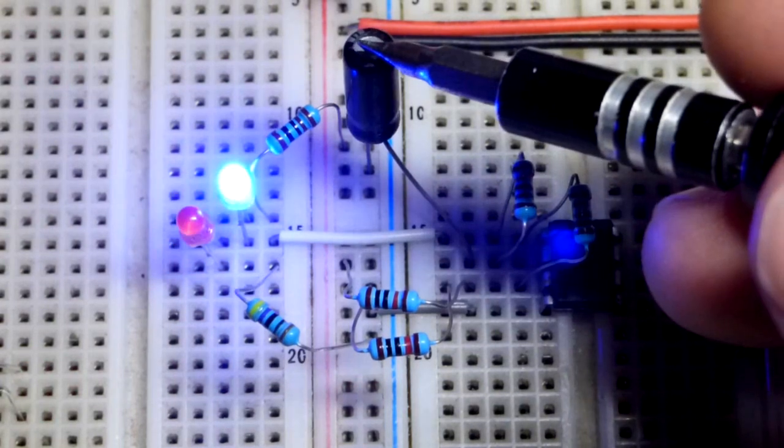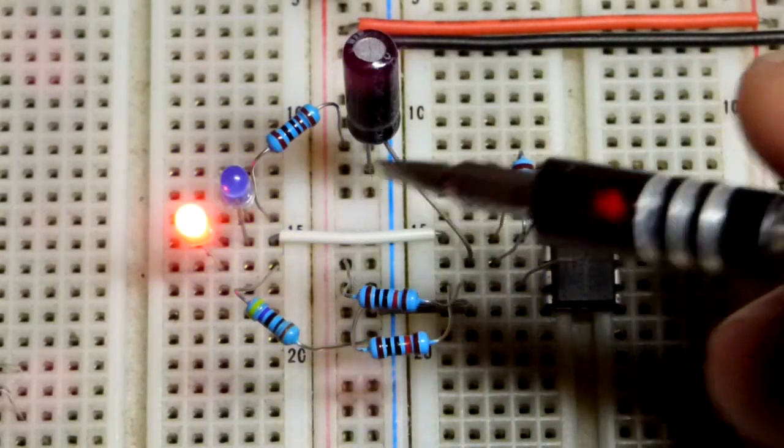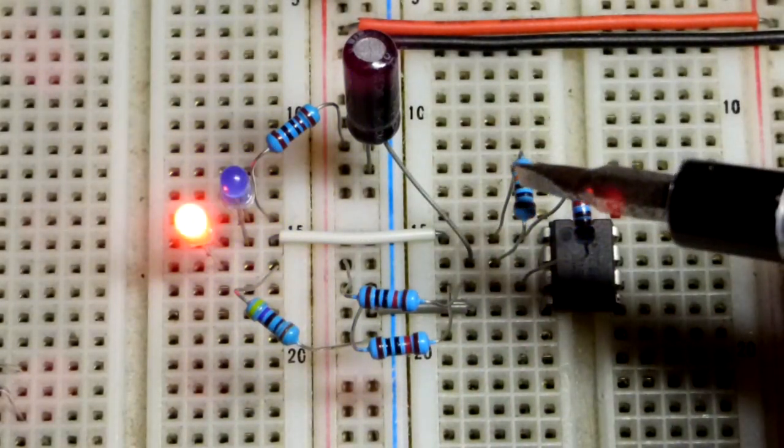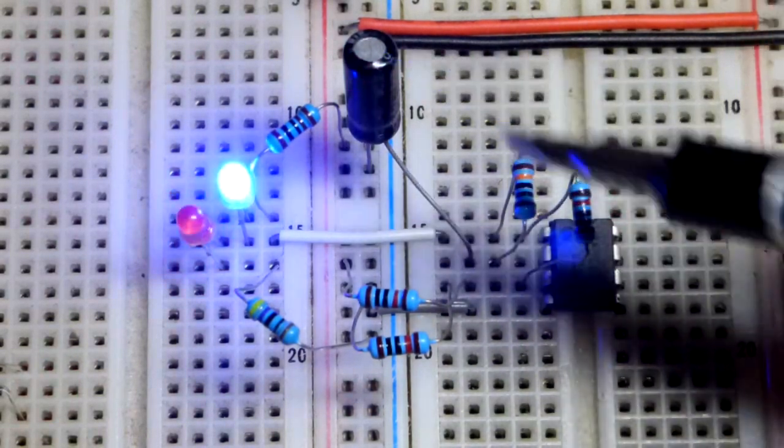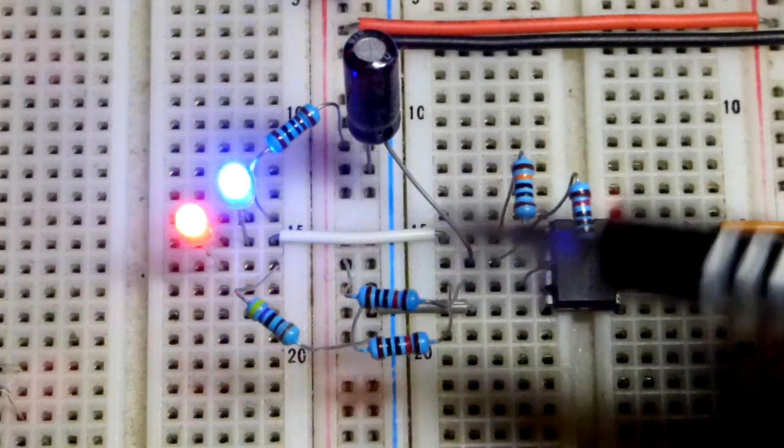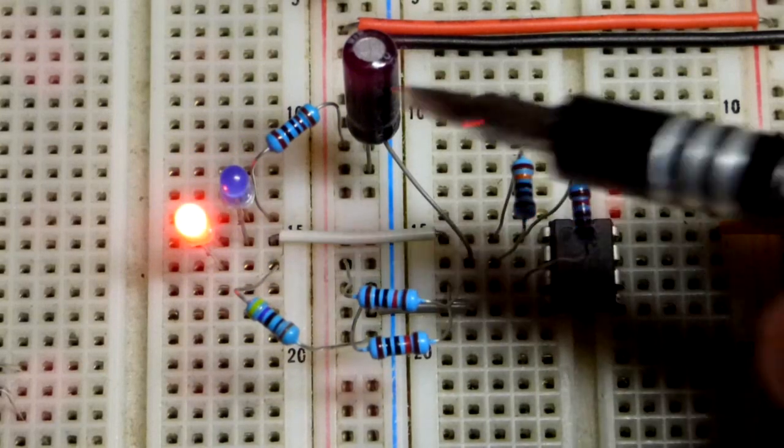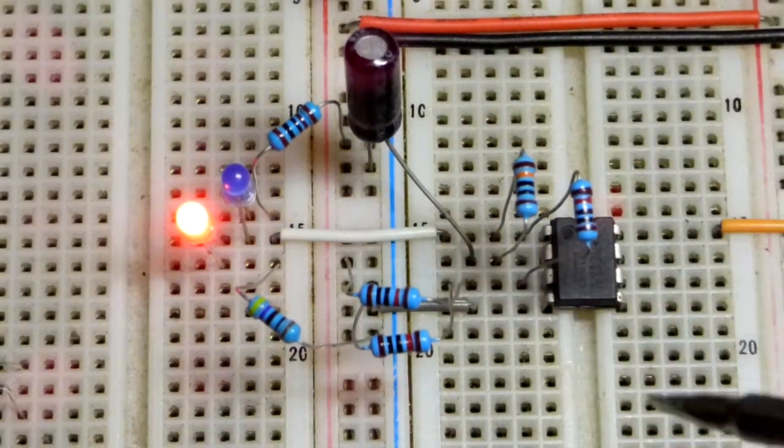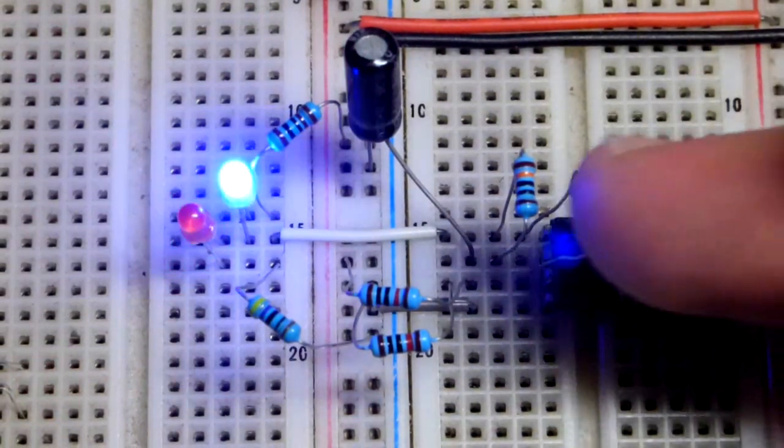So if we used a larger value capacitor, this process is going to take longer. Same as if we use a larger value resistor. If one or the other is a lower value, then things are going to go faster right here. So we can adjust the two of them to adjust our timing as desired.